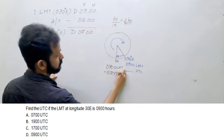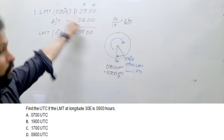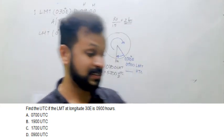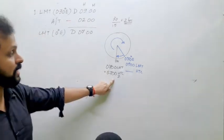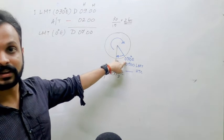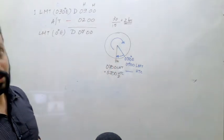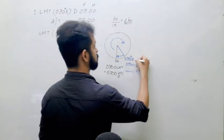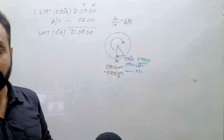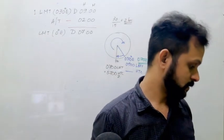This is the LMT at the Greenwich Meridian, which is what we call UTC or Zulu time. Now the question asks: what is the UTC time at 30 degrees east? It is the same — 0700 Zulu. Do not calculate it back. UTC is independent of longitude, so the answer is 0700.